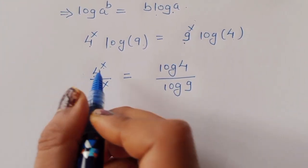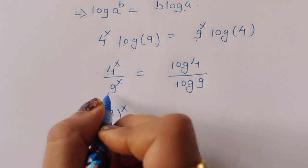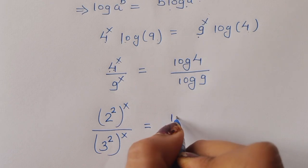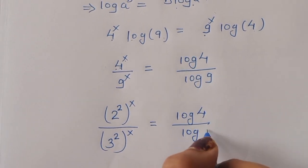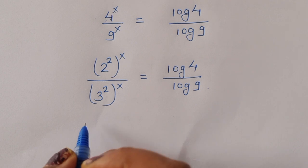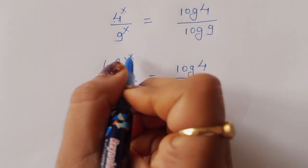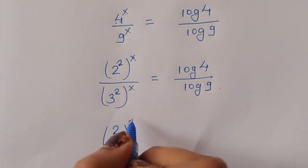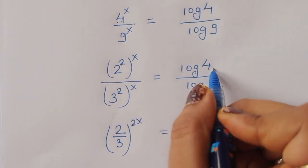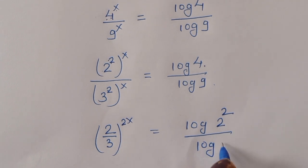Now 4 power x over 9 power x — we can write 4 as 2 power 2 and 9 as 3 power 2, so we get 2 power 2x over 3 power 2x, which is (2/3) power 2x. On the right side, log of 4 is log of 2 squared and log of 9 is log of 3 squared.